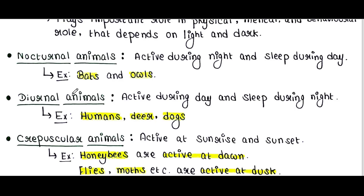Nocturnal animals are active during night and sleep during day. Bats and owls are such animals. Diurnal animals are active during day and sleep at night. Examples of diurnal animals include humans, deer, and dogs.